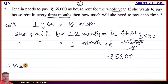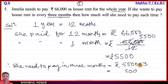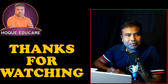Therefore, she needs to pay in three months: rupees 5,500 multiplied by 3. Calculating: 5,500 times 3 equals 16,500. So every three months she needs to pay rupees 16,500.